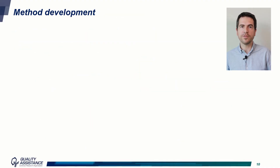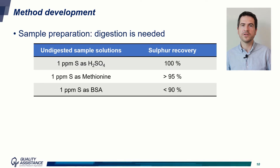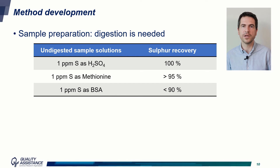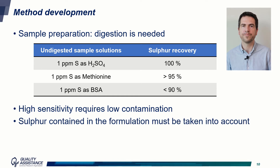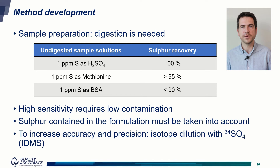The first thing we evaluated was the need for sample preparation. We analyzed solutions containing one ppm of sulfur either as sulfuric acid, as methionine, or as BSA (bovine serum albumin). The sulfur recovery decreases with the complexity of the molecule, so we decided to perform a microwave digestion step on all samples. We also considered the limitation of contamination to get high sensitivity, and the content of sulfur coming from the formulation. To increase precision and accuracy, we decided to use isotope dilution with sulfate containing sulfur-34, an isotope of natural sulfur.